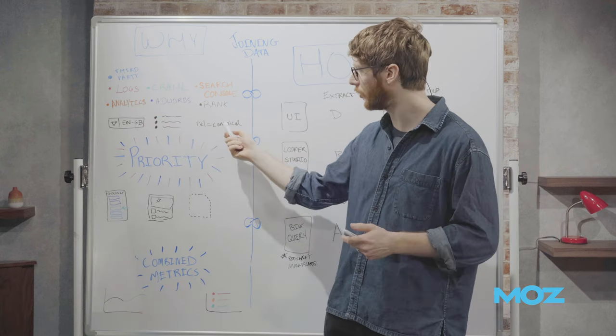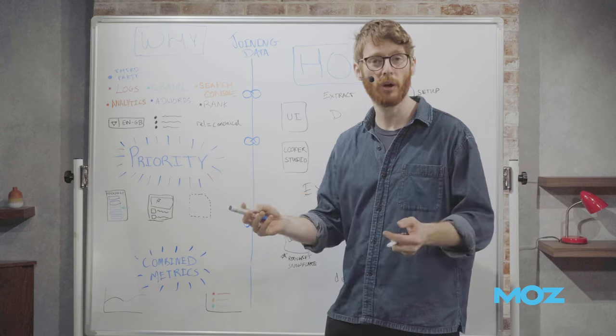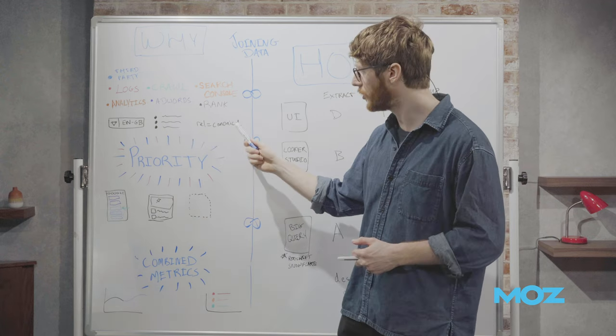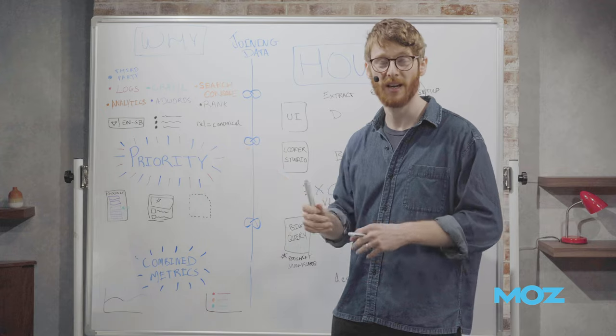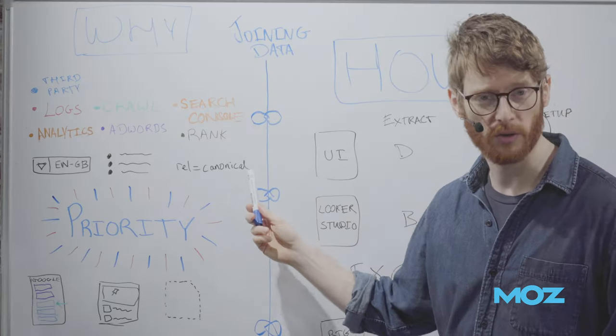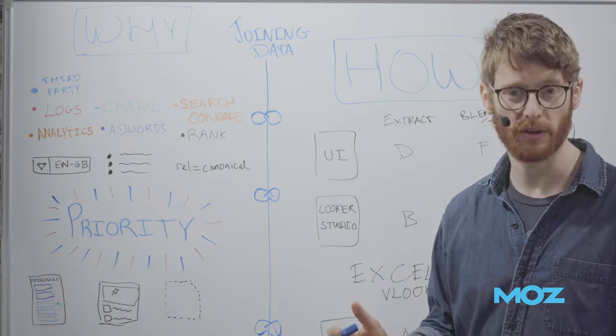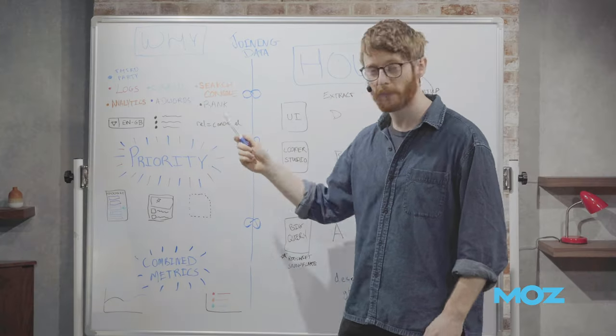You can't necessarily weight how likely Google is to fix your canonical, but because you don't know that, weighting by the traffic that those pages and templates receive is going to be a pretty good way to get some prioritization data into the tickets that you're making. So that's the first one, right? We join our technical things and we join it with some sorts of traffic in order to get some prioritization.